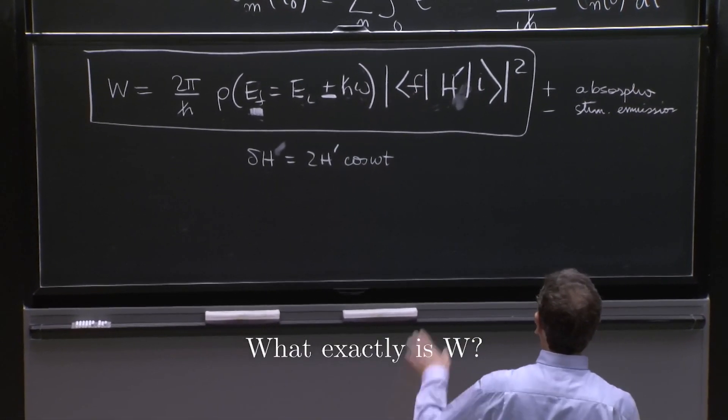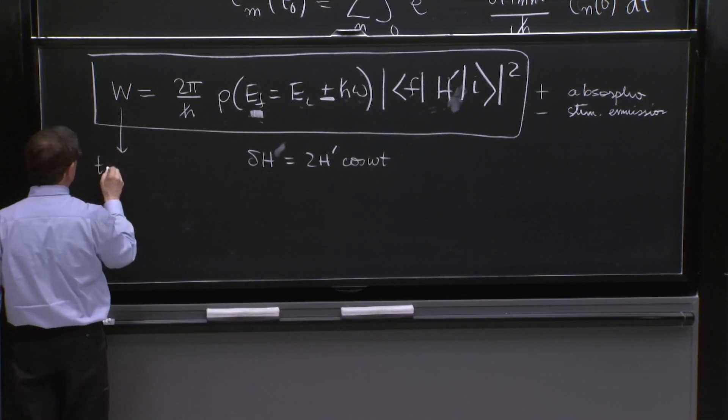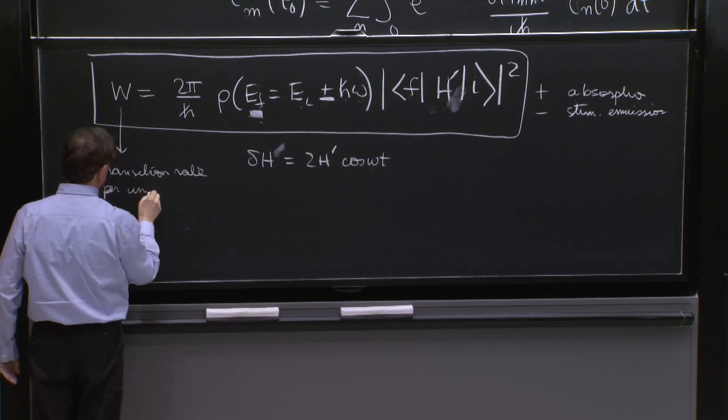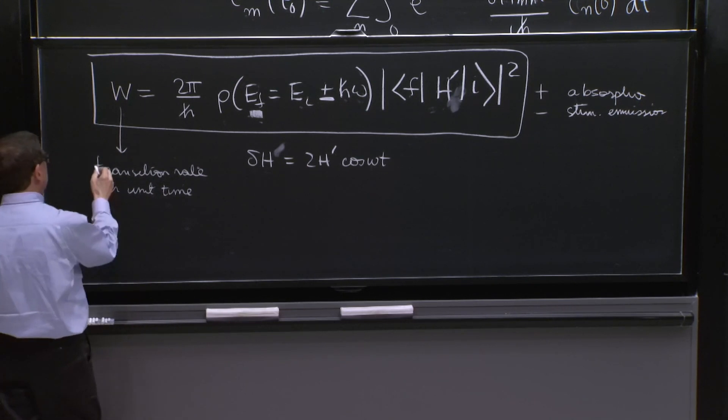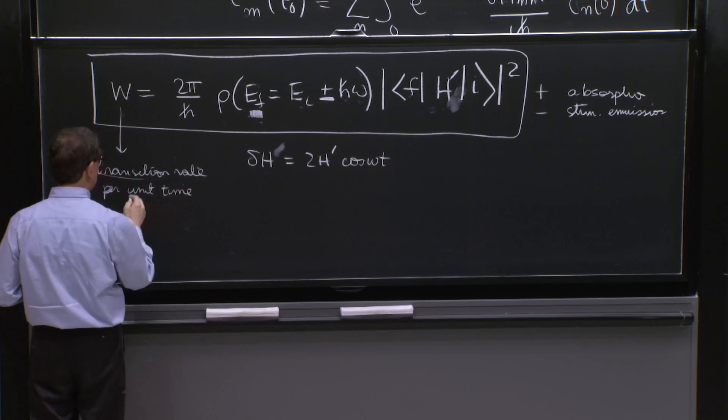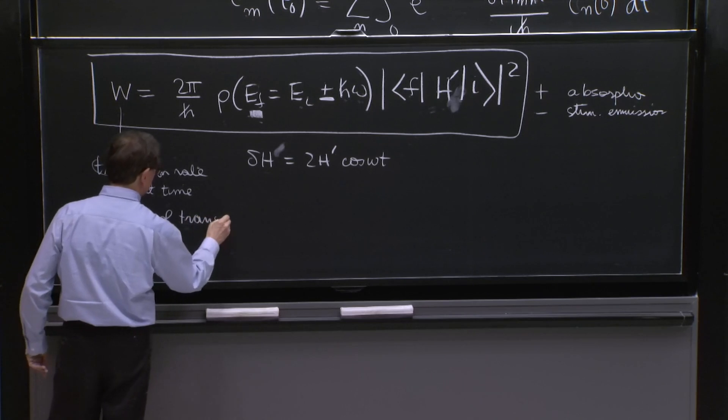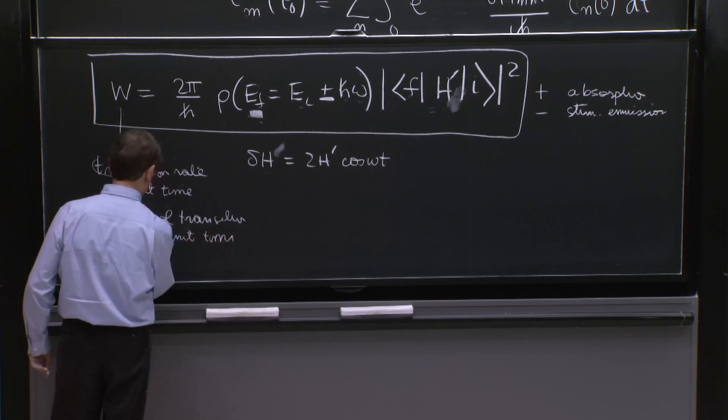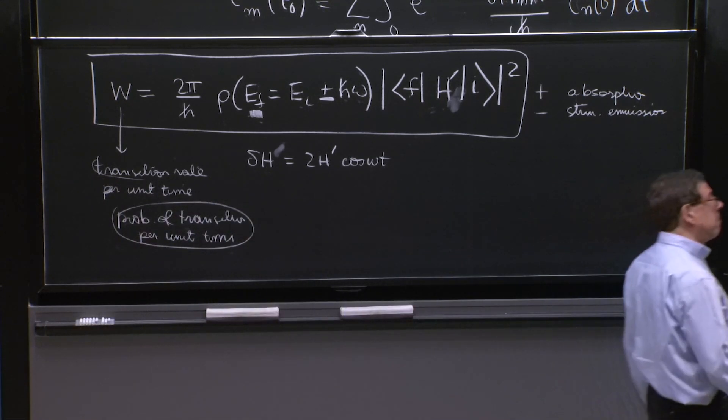So W is the rate. So this is called the transition rate per unit time. That's probably more understandable than the word rate.